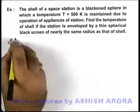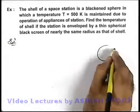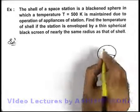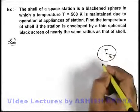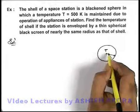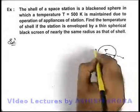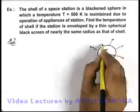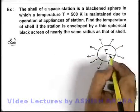In this particular situation, we are given that there is a spherical space station of radius r, and its temperature T is maintained by operation of appliances. As the temperature is maintained, whichever amount of power is generated, the same amount must be radiated to space. If there is an imbalance in the radiated power and generated power, obviously the temperature will change.